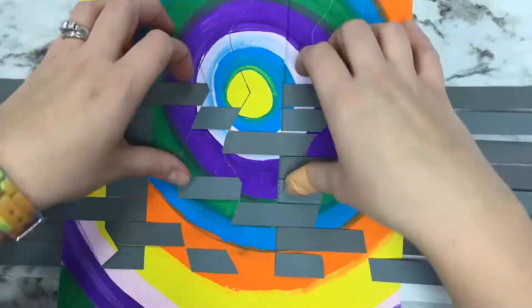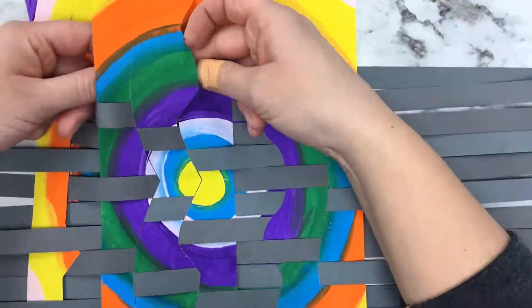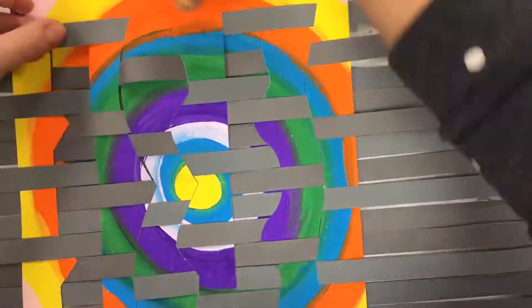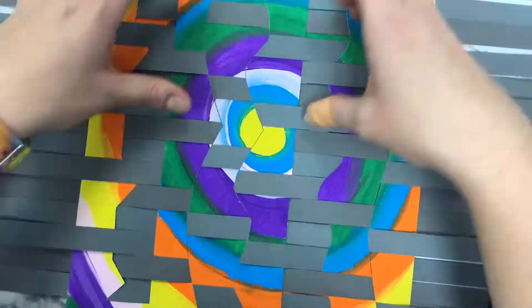What I'm doing here is my first strip goes over, under, over, under, like our traditional weavings. Then the second strip goes every two strips and then the third goes every two, but I start in a different spot. I repeat these same three types of weaving lines again and again to create a complex pattern on my paper.